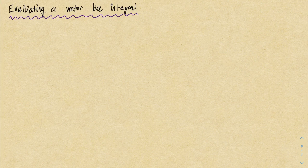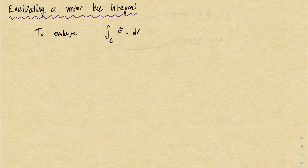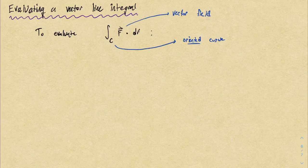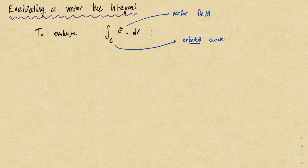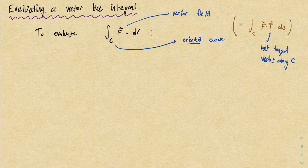The main course for today is vector line integrals. As usual, before we do some examples, I'm going to go over some generalities. Given one of these vector line integrals, what are we doing? Like with the scalar case, we have a curve, but this time equipped with an orientation — a particular direction we're traveling on the curve. The thing we're integrating is a vector field. A vector line integral is a specific kind of scalar line integral — it's the scalar line integral of the vector field dotted with the unit tangent vector in the C direction.